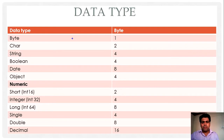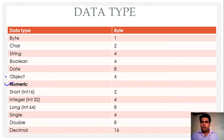Basically when you divide data types into categories, you can find numeric data type, object data type, date data type, character type, string type, and decimal data type.